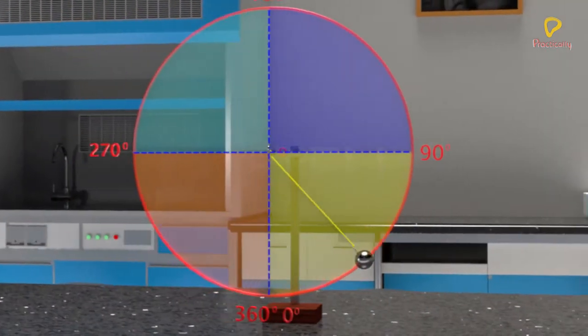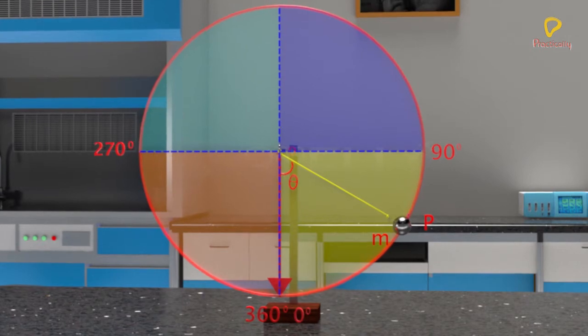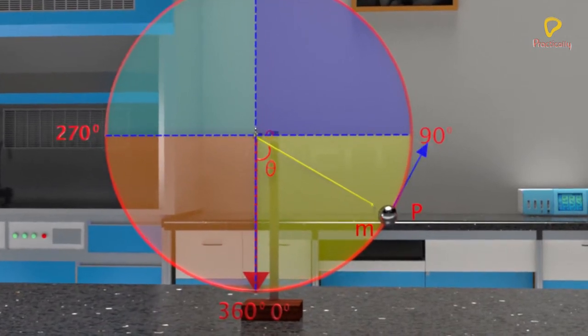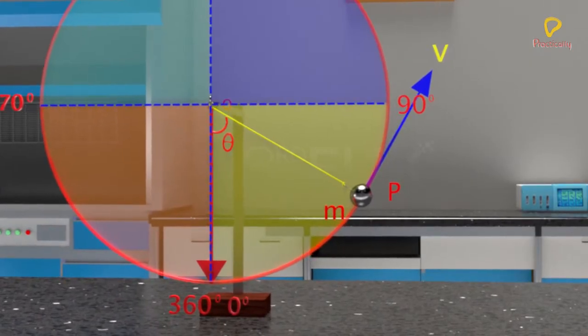Consider the bob at point P, where OP makes an angle theta with the vertical line OA. Speed of the bob at P is V, and it is tangential to the circular path.